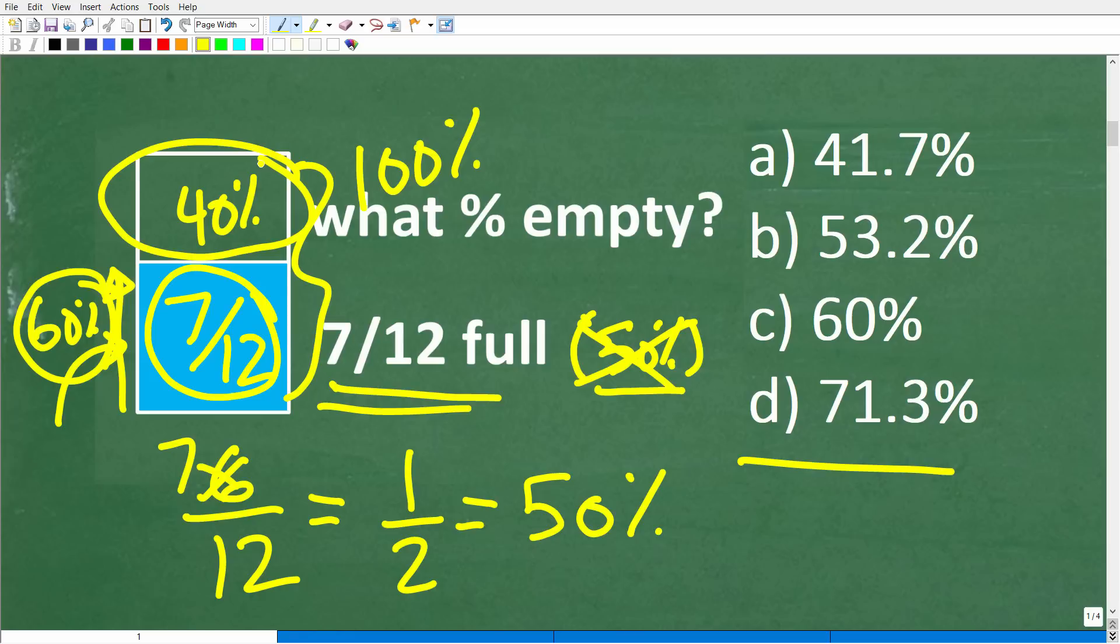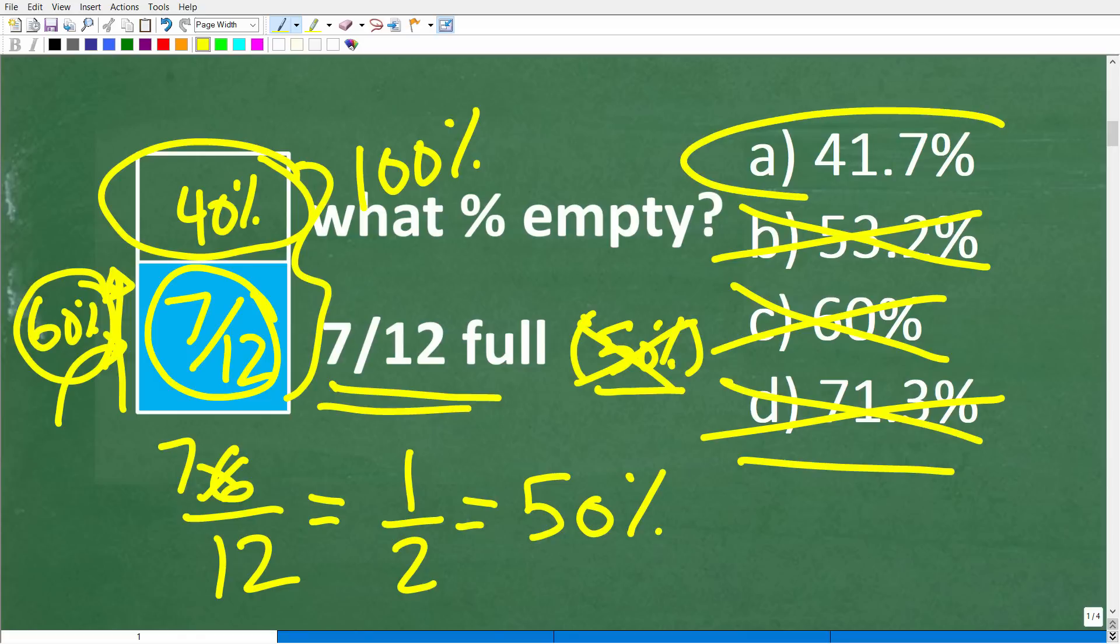Because the entire cup would have to represent 100%. So we know that 7/12 represents a percentage that is more than 50%. So whatever percent empty this cup is, it has to be less than 50%, right?